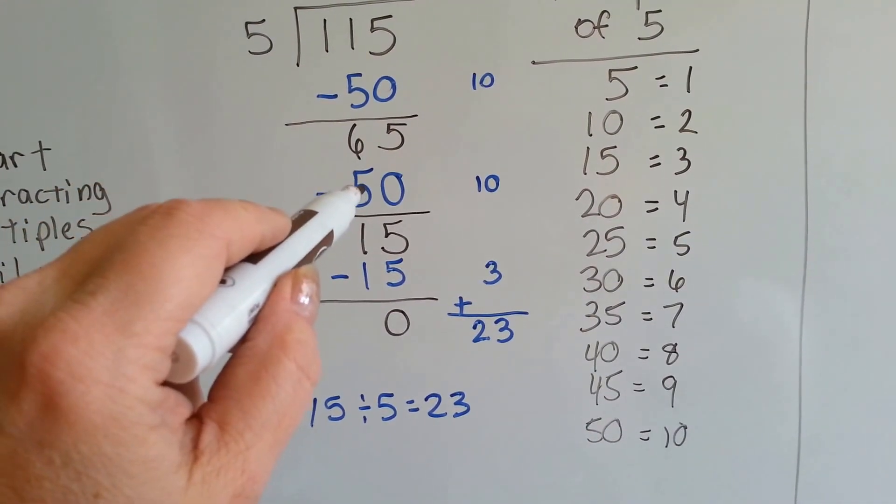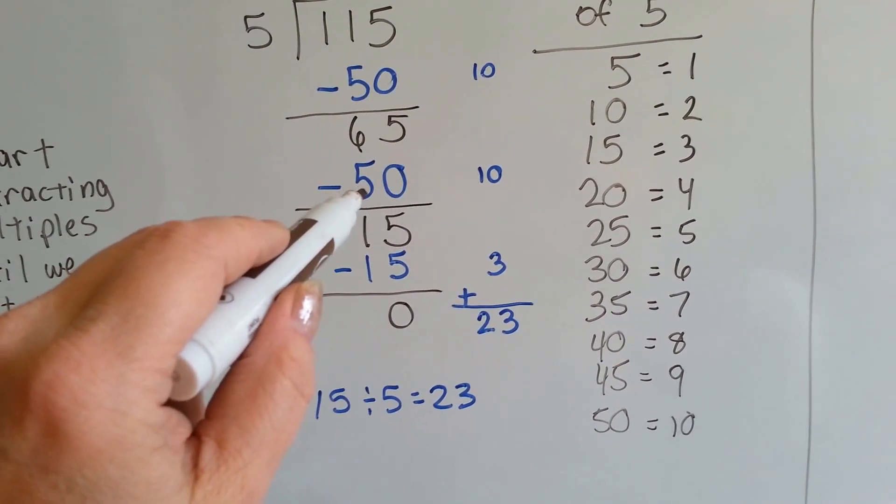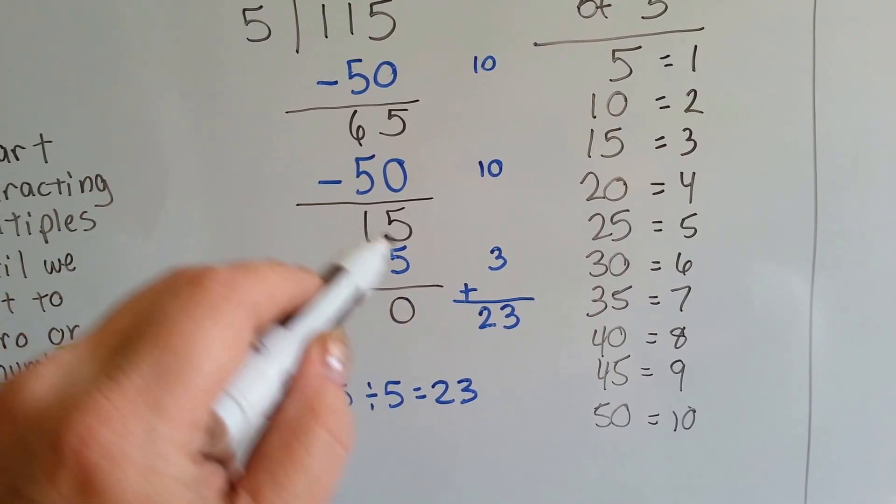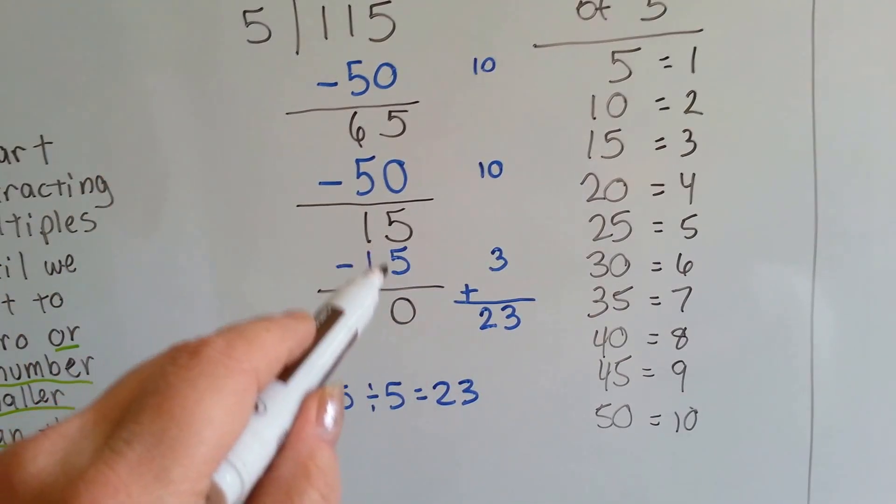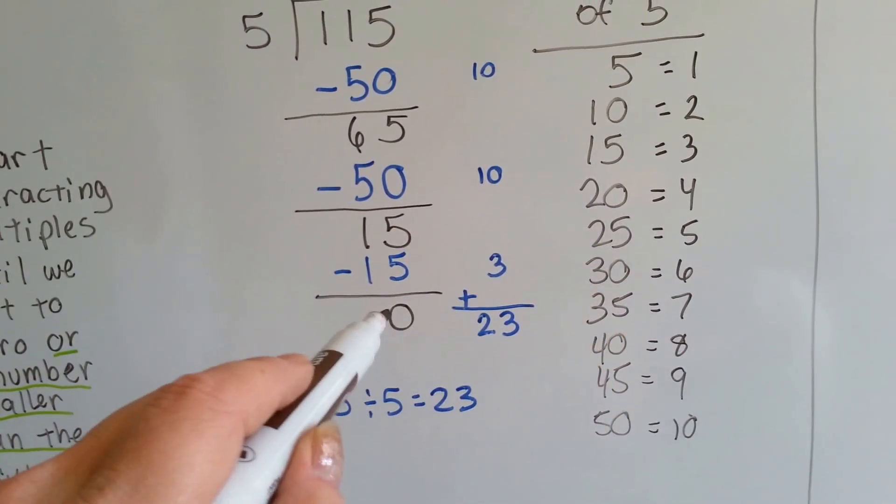We can take away another 50. That means it's another 10. It's another 5 times 10 we're taking away. 5 take away 0 is 5. 6 take away 5 is 1. 15 is a multiple of 5. And that's a 3, isn't it? And that gets us to 0.